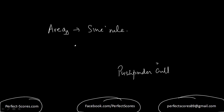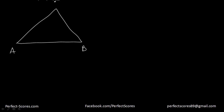Suppose you've already watched the introduction to sine rule video and know what the sine rule is. What I'm going to do is use that expression to find the area of a triangle using the sine rule. Let's suppose we have any triangle — whether it's obtuse, acute or right angle, it doesn't matter. We have A, B, C here, and opposite to A is side a, opposite to B is side b, and opposite to C is side c. These are the sides.